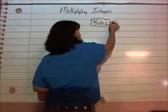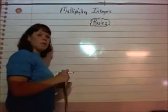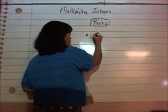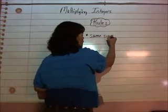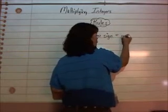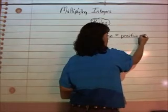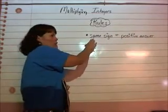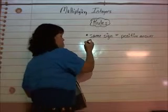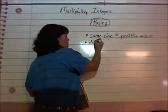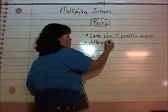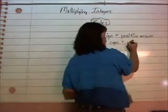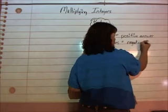Your rules — sometimes we have steps, sometimes we have rules, and in this case we're going to have a rule. First rule: same sign equals a positive answer. If they have the same sign, then it's going to equal a positive answer. Different signs, your answer will come out to be a negative answer.